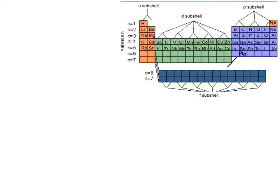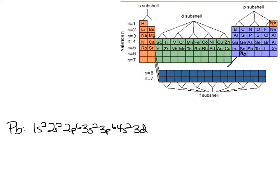Let's do Pb (lead), which falls under Sn on the periodic table. Writing the electron configuration from the top: 1s2, 2s2, 2p6, 3s2, 3p6, 4s2. We hit the d block so we put one level back: 3d10. Back to p: 4p6. Now in the fifth row: 5s2. We hit d again so one level back: 4d10, then 5p6. Now in the sixth row: 6s2. We go to the f block which is really two energy levels back, so 4f14. Now back to d, one energy level back: 5d10. And in p, back to the row we're in: 6p2.